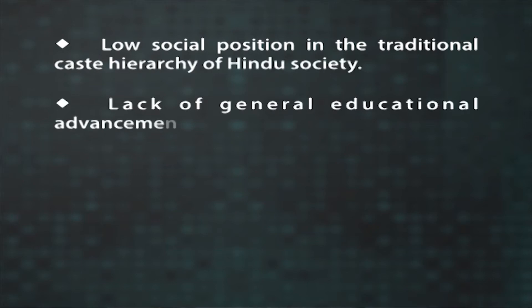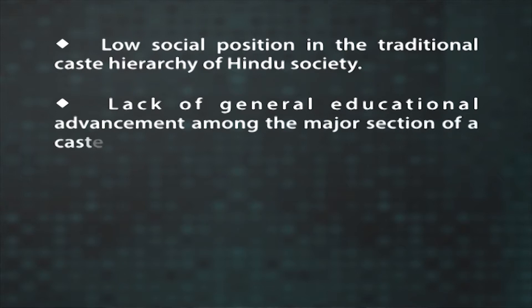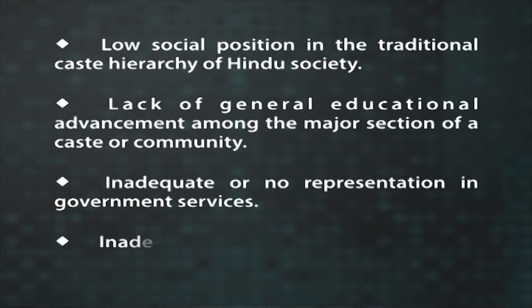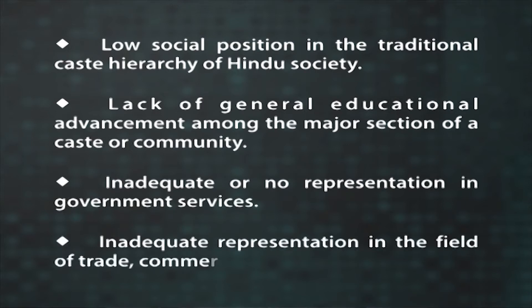After sorting the facts collected, the commission formulated the following criteria to identify socially and economically backward classes: low social position in the traditional caste hierarchy of Hindu society; lack of general educational advancement among the major section of a caste or community; inadequate or no representation in government services and inadequate representation in the field of trade, commerce and industry. The commission submitted its report on March 30, 1955. The report presented a list of 2,399 castes and communities considered as backward, of which 237 were considered as most backward requiring special attention.